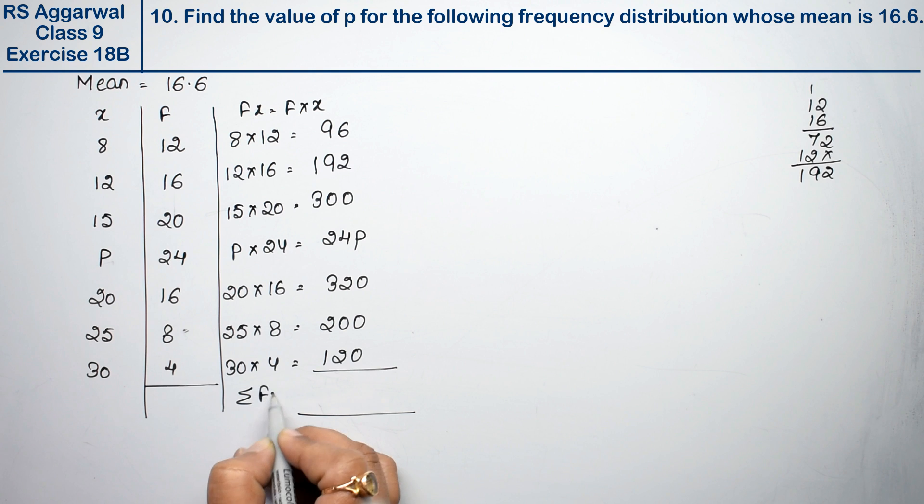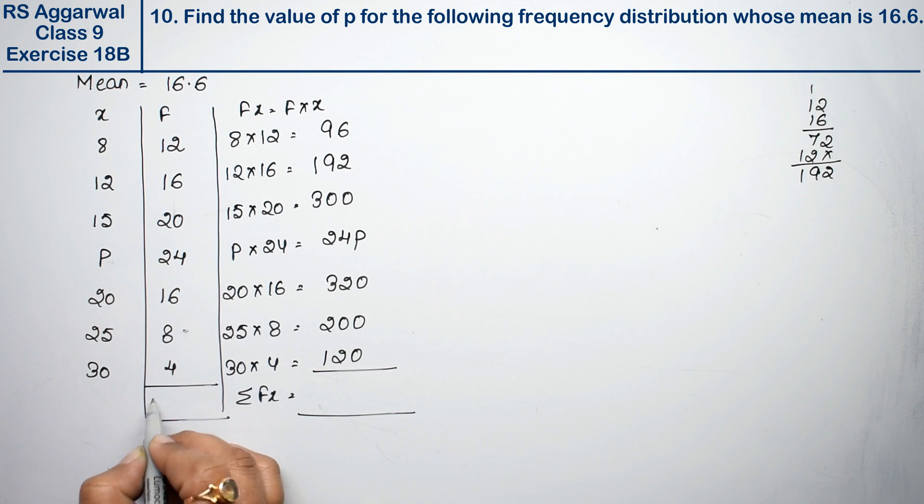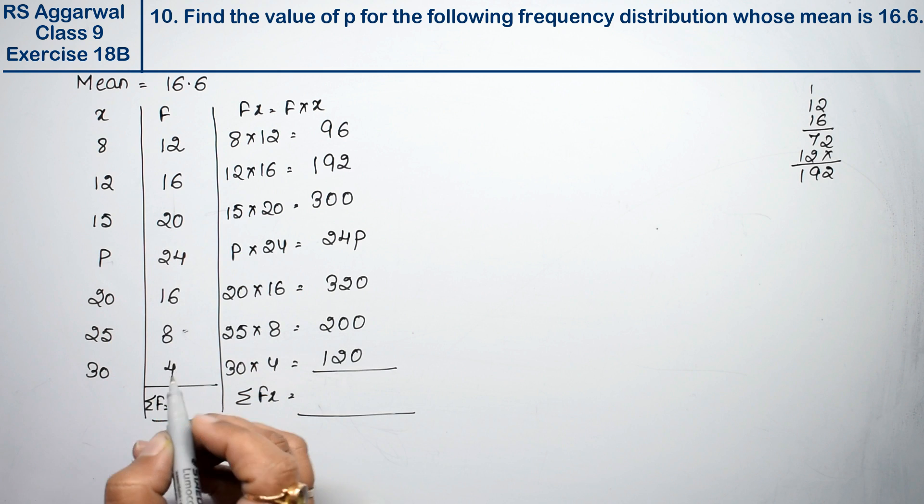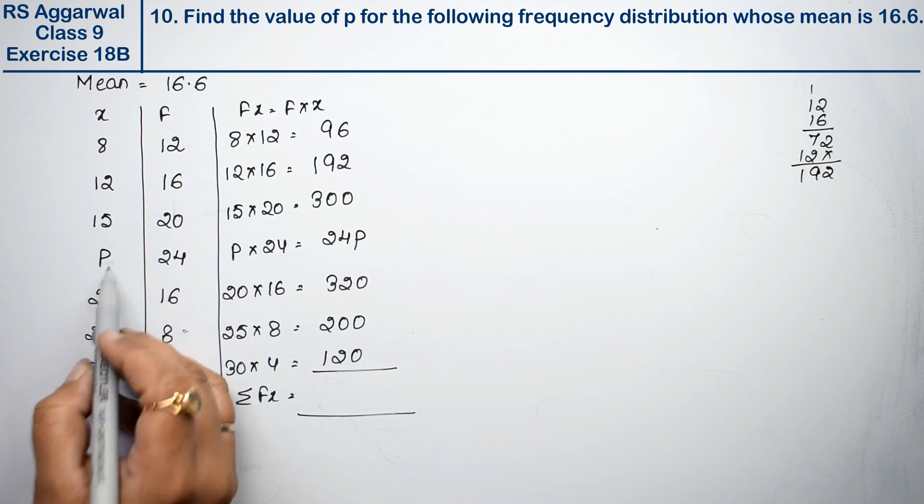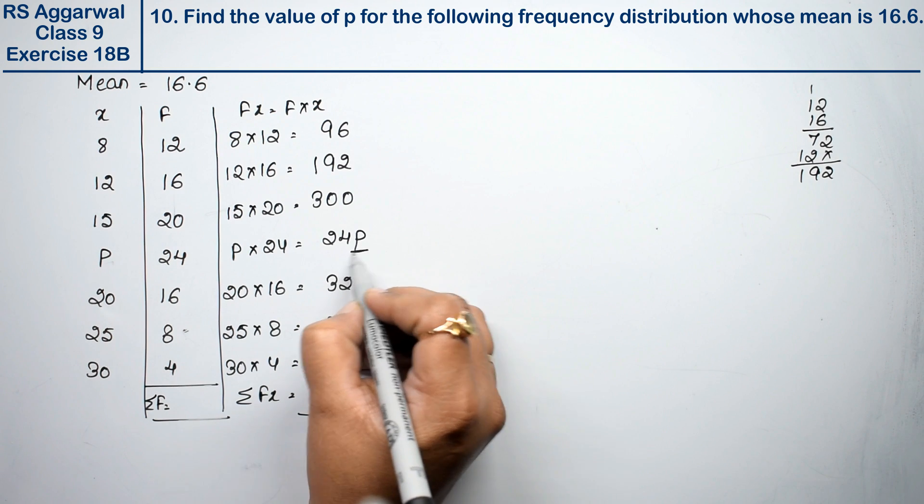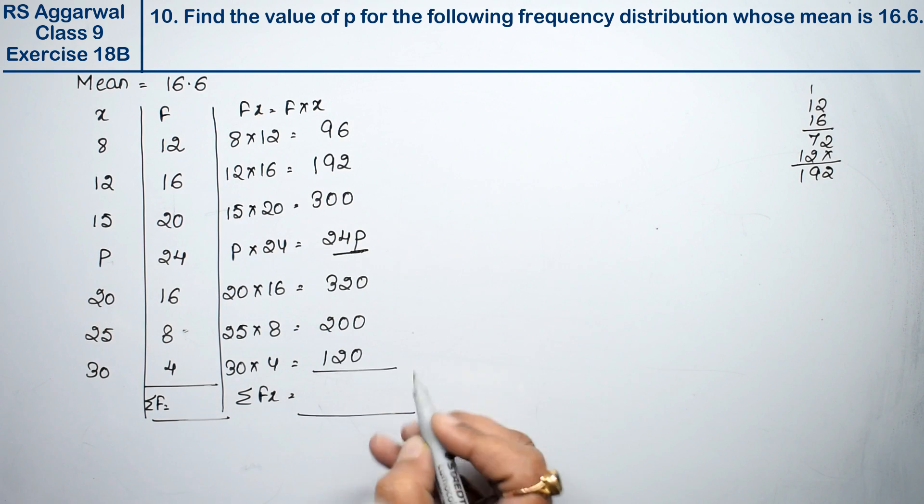Now we need sigma fx and sigma f. Since there's no other variable, we add up all the values including the term with 24p.